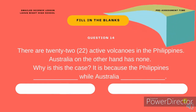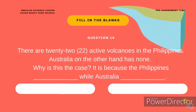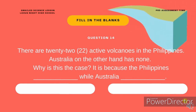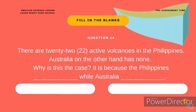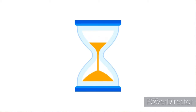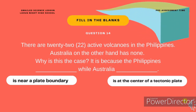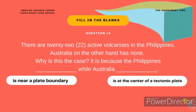Fill in the blanks. Question 14. There are 22 active volcanoes in the Philippines. Australia, on the other hand, has none. Why is this the case? Is it because the Philippines is near a plate boundary while Australia is at the center of a tectonic plate?